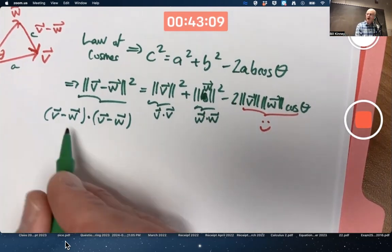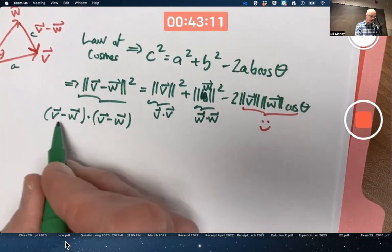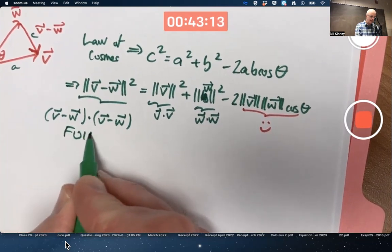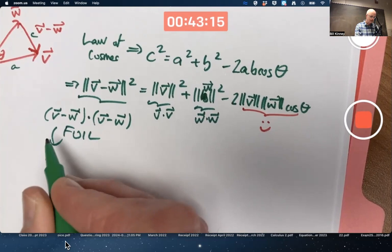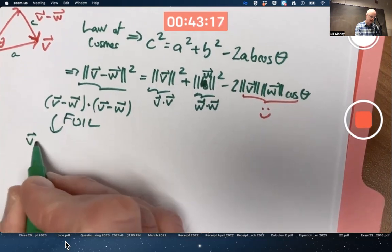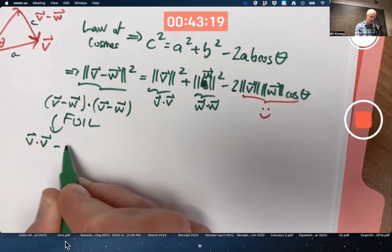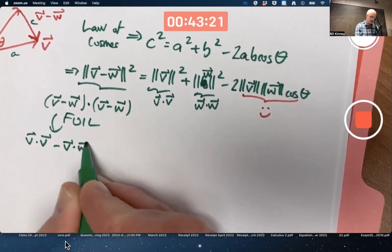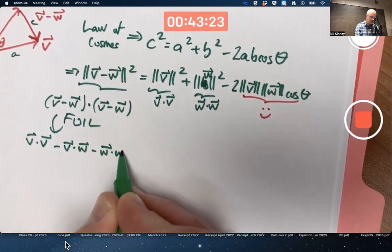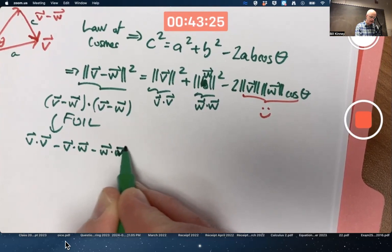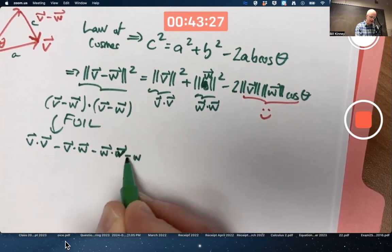The distributive property would allow us to essentially foil this. To say it's V dot V minus V dot W minus W dot V.